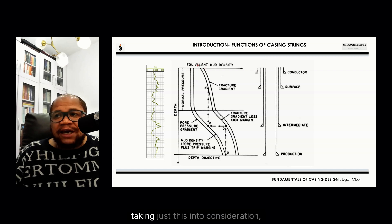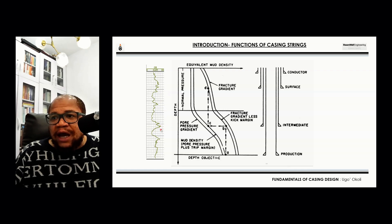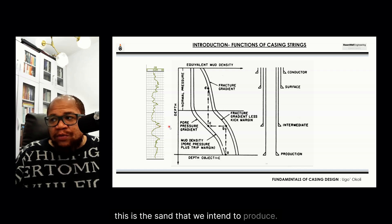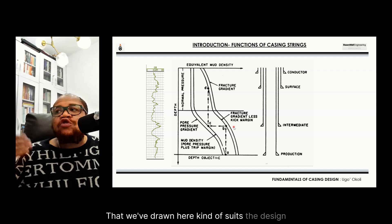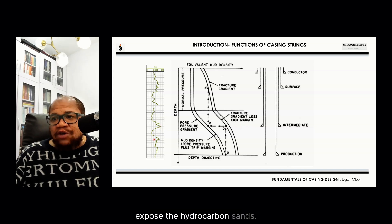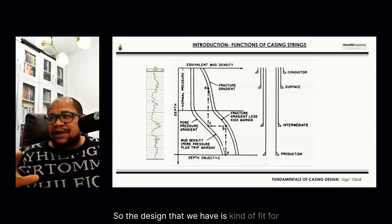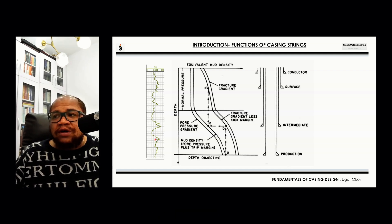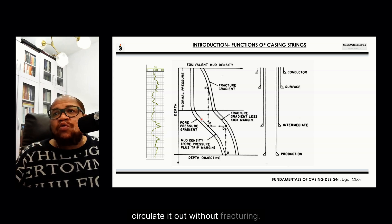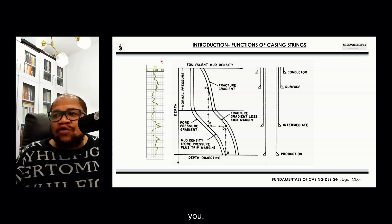We don't just take this graphical approach alone — you also have to look at the lithology, paying strong attention to the sands you intend to produce. This design suits what we want because we're able to set our intermediate casing to isolate the last shaley sand before we drill the production zone, exposing the hydrocarbon sands. We then run the production casing which will be perforated to expose that hydrocarbon sand. There is also the keyword kick tolerance — the maximum amount of fluid you can take into the wellbore and circulate out without fracturing the last casing shoe — which must also be taken into consideration.